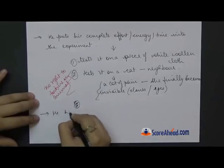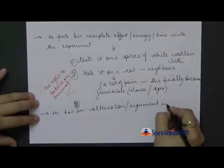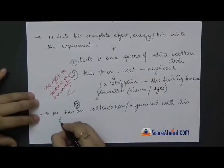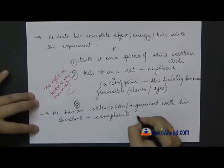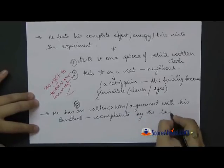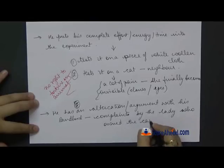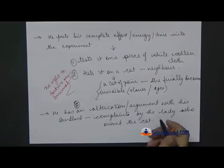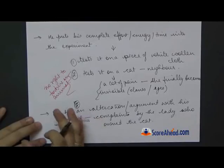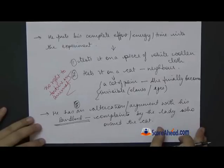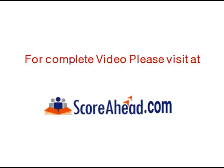He has an altercation, an argument with his landlord. Because the lady complains against him, a complaint by the lady who owned the cat. So the lady explains that I could hear the mewing sound all night from his room. So I don't know what he is doing. And the landlord already is not happy with him. He is an old man and he is not happy with this kind of a tenant. He just wants him to get out.